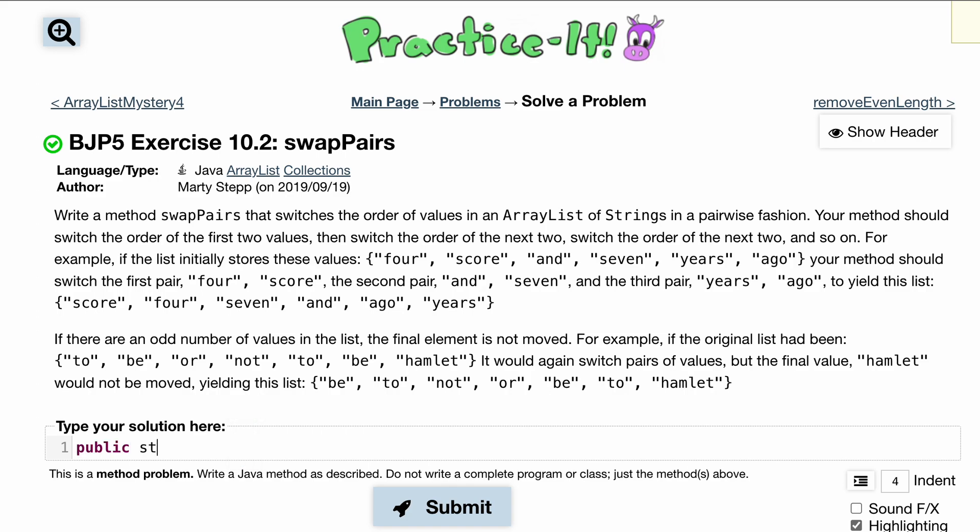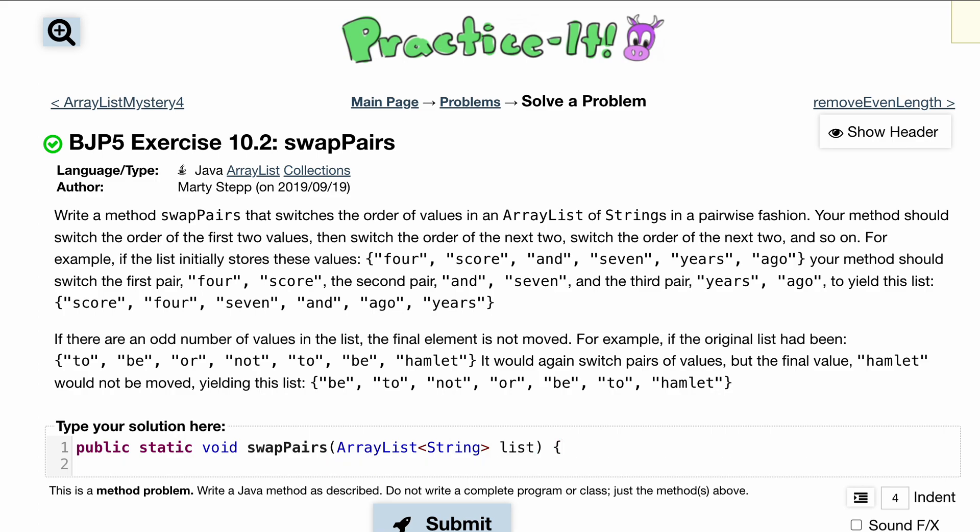Let's do a public static. We're not returning anything so void, and we are going to call this swapPairs. Inside of here we're going to take an ArrayList of type String and we'll just call this list, and now we are inside of our method.